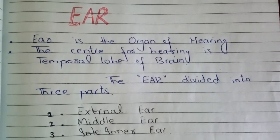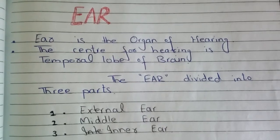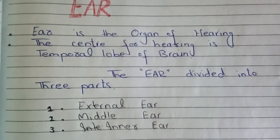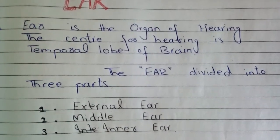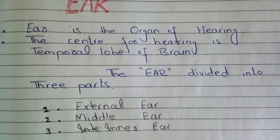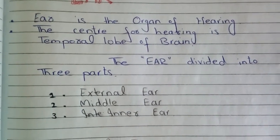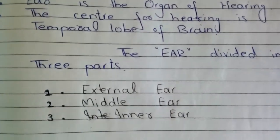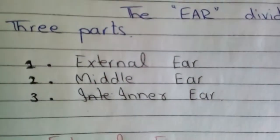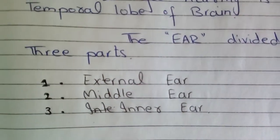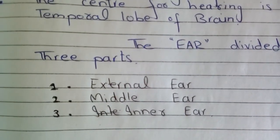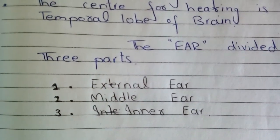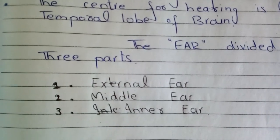The organ for hearing is the ear. The center for hearing is the temporal lobe of the brain. The brain is divided into three parts: external ear, middle ear, and internal ear. Now I will explain the external ear.